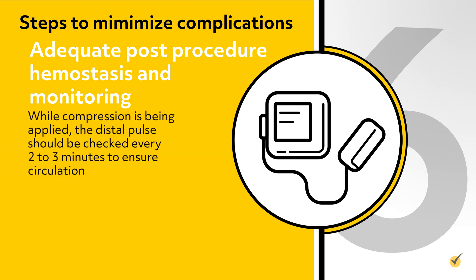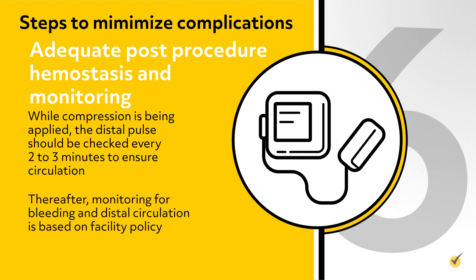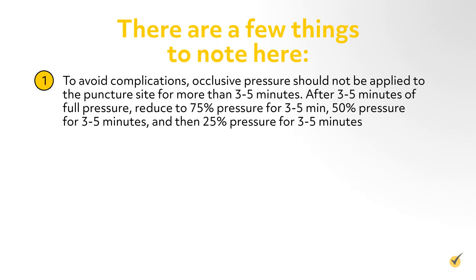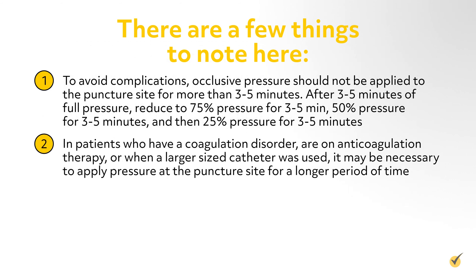While compression is being applied, the distal pulse should be checked every 2 to 3 minutes to ensure circulation. Thereafter, monitoring for bleeding and distal circulation is based on facility policy. To avoid complications, occlusive pressure should not be applied to the puncture site for more than 3 to 5 minutes. After 3 to 5 minutes of full pressure, reduce to 75% pressure for 3 to 5 minutes, then 50% pressure for 3 to 5 minutes, and then 25% pressure for 3 to 5 minutes. In patients who have a coagulation disorder, are on anticoagulation therapy, or when a larger sized catheter was used, it may be necessary to apply pressure at the puncture site for a longer period of time.